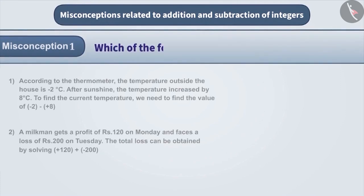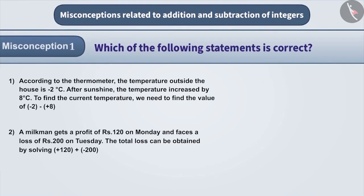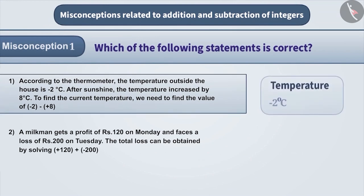Which of the following statements is correct? The first statement says that the temperature increase is 8 degrees centigrade from minus 2 degrees centigrade. To find the current temperature, many times subtraction is carried out. The expression is written as minus 2 minus plus 8.